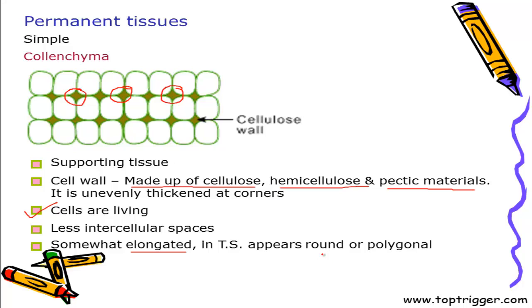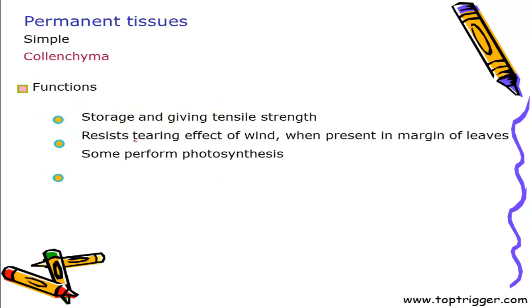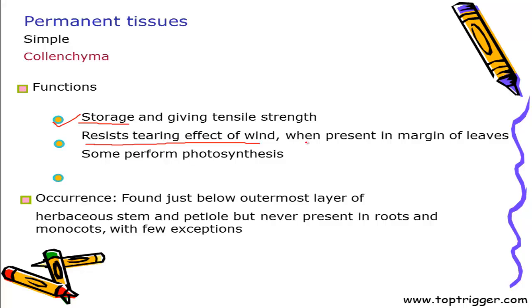The prime function of colenchyma is providing support and strength, but besides strength it can also act as storage. It is colenchyma that resists the tearing effect of wind when present in the margin of leaves. One important thing about colenchyma tissue is that it is not at all present in roots or in monocots. The reason for absence in roots is that roots are found below the earth and do not need any protective tissue.